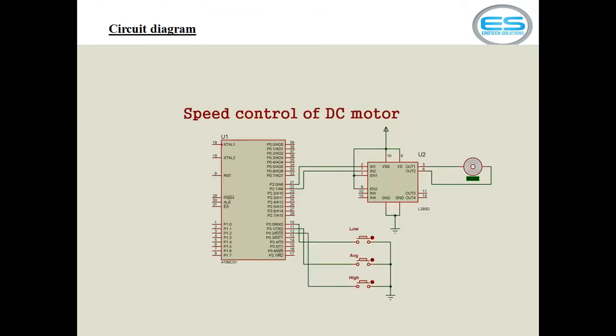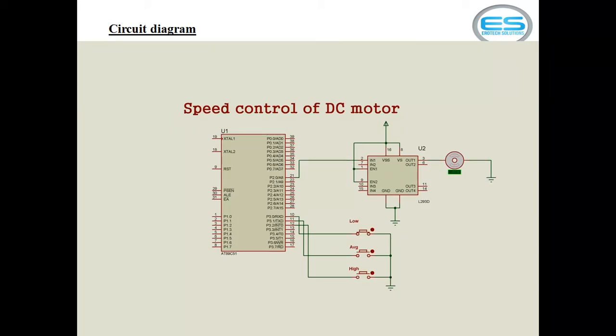I will show you the hardware connections with these buttons, driver IC, and motor. This is the circuit for your application. There are three individual buttons: low, average, and high. These three buttons I am using for speed control. One end of motor I am giving direct ground connection, and other end I am using only one input channel from this driver IC.